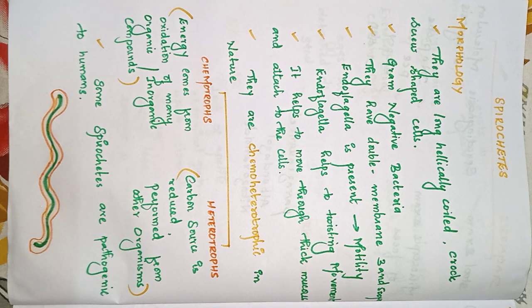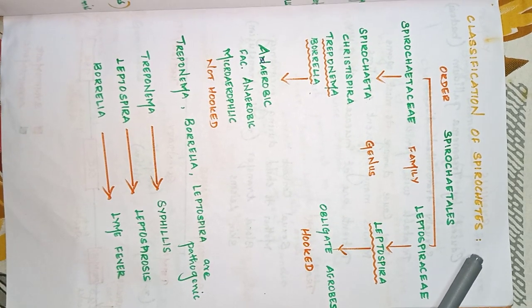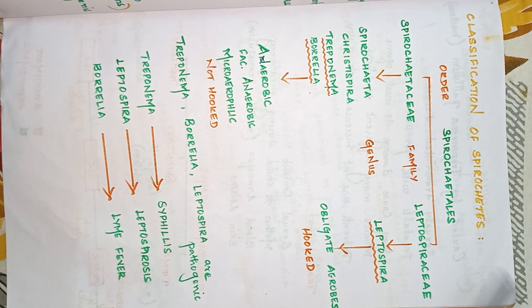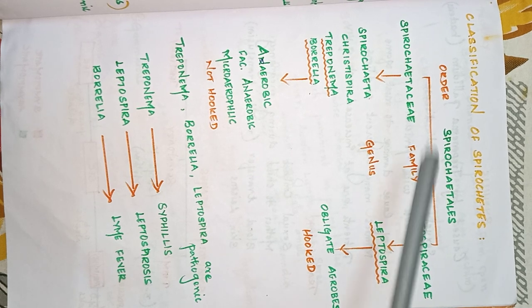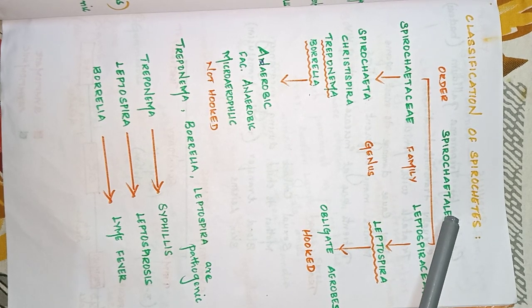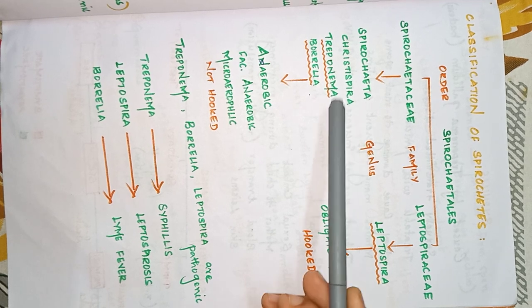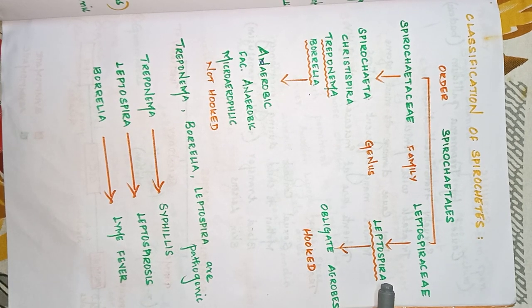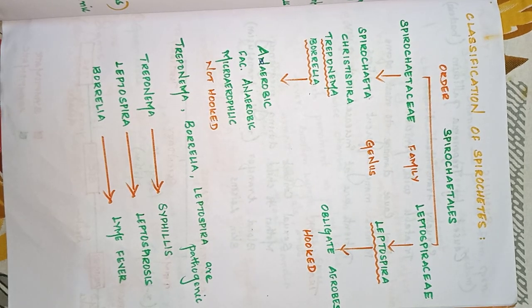Now let's see the classification of spirochetes. They belong to the order Spirochaetes. The family divides into two: Spirochaetaceae and Leptospiraceae. Within Spirochaetaceae, the genera include Spirochaeta, Cristispira, Treponema, and Borrelia. Within Leptospiraceae, the genus is Leptospira.